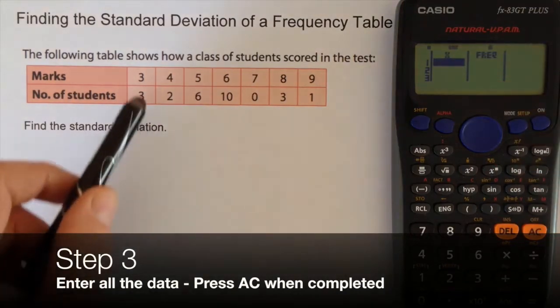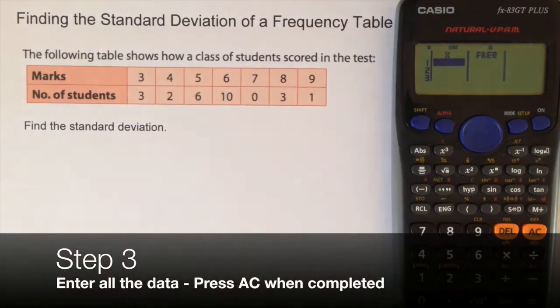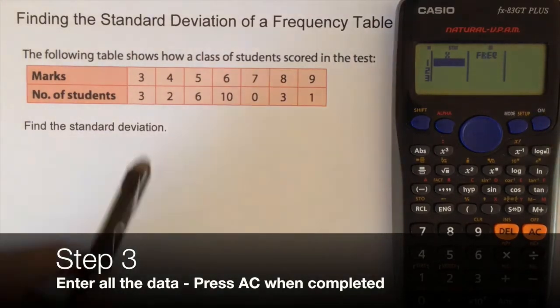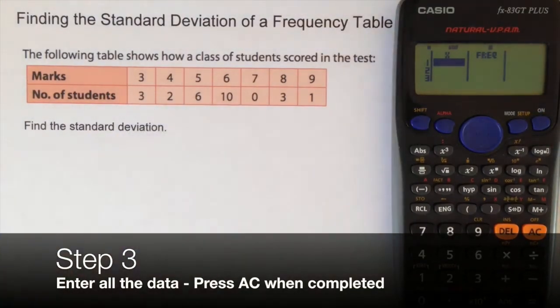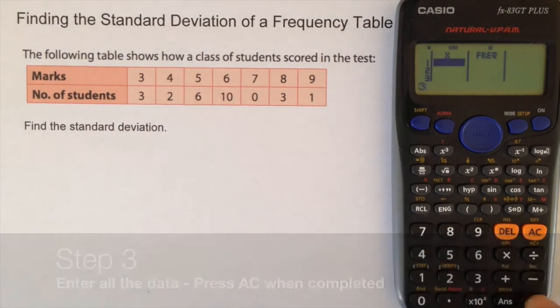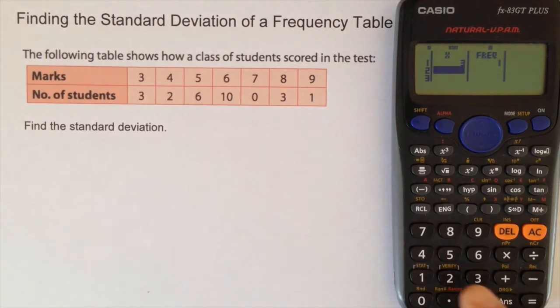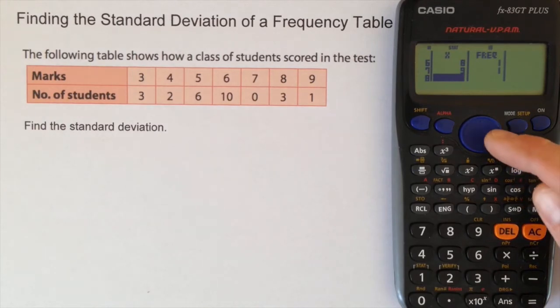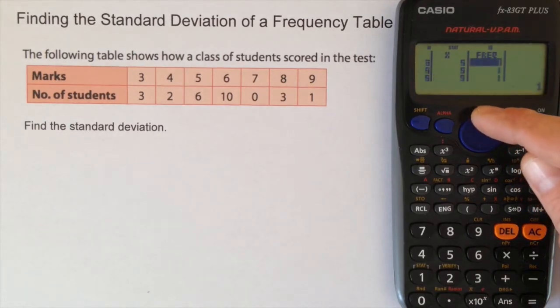The X column are the marks, 3, 4, 5, 6, etc. And the frequency will be 3, 2, 6, 10. So I enter each piece of data, I'll start with the marks, 3, and press equals each time. 4 equals, 5 equals, 6 equals, etc. Now I have my X column written in.